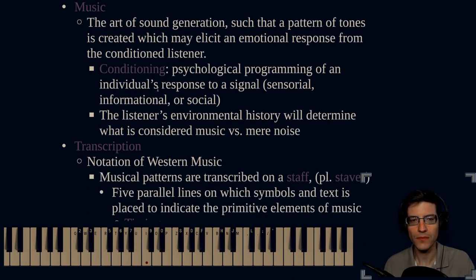Well, did it elicit an emotional response? Are you conditioned to understand that as music? Was that rhythm? Rhythm is one element of music, as we'll see later. But anyway, what is conditioning? Conditioning is the psychological programming of an individual's response to a signal, sensorial, informational, or social. So, why do I include this element of conditioning? Well, in order for you to interpret something as music, you have to be conditioned to understand that it is music. Some elements, some types of music, for instance, what entire cultures will take as being the standard of music, take some elements of Asian music, or Thai music. And to a Western ear, it sounds almost like a cacophony, like what is going on here? But if you've been conditioned to understand this style of music, you understand it, and you're able to categorize it and have the proper response.